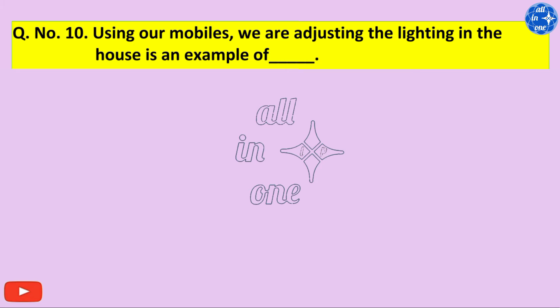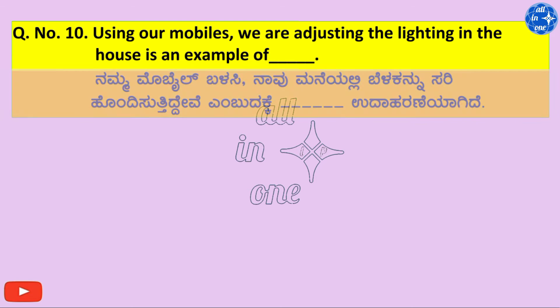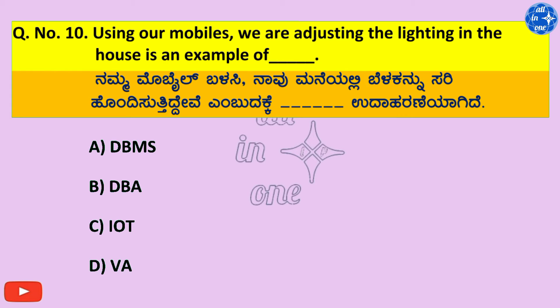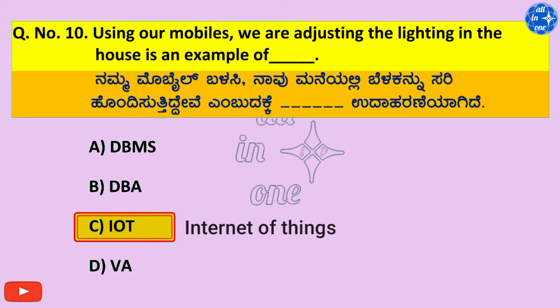Question number 10. Using our mobiles, we are adjusting the lighting in the house — this is an example of dash. Options: A. DBMS, B. DBA, C. IOT, D. VA. Right answer is C. IOT — Internet of Things.